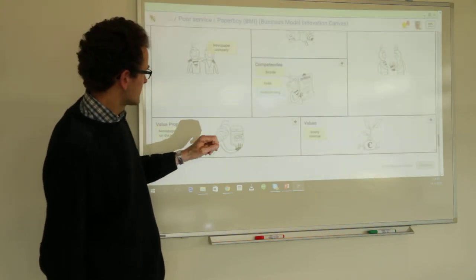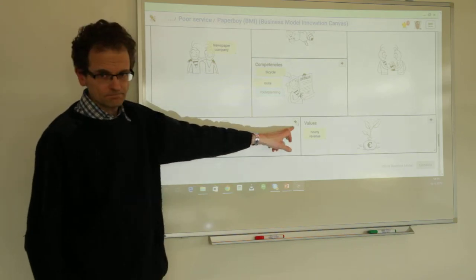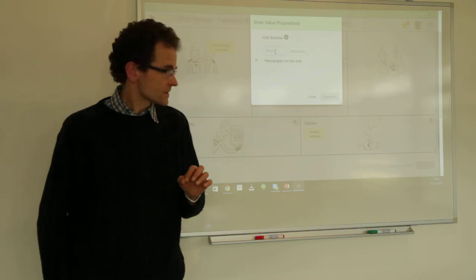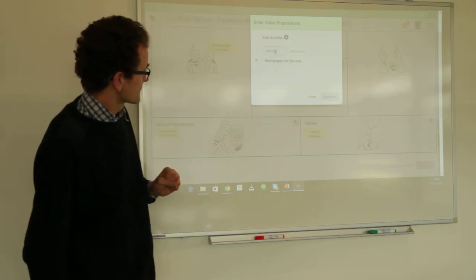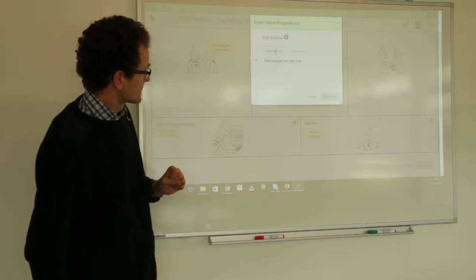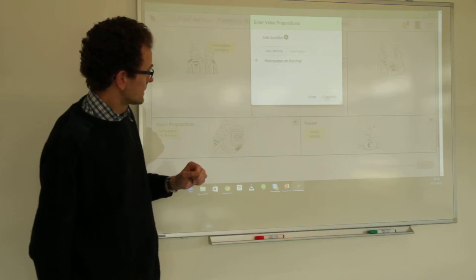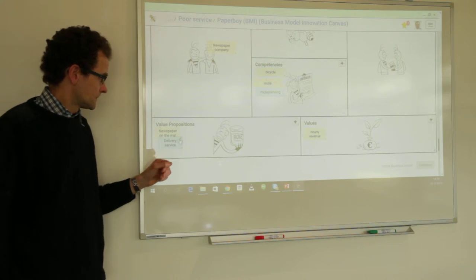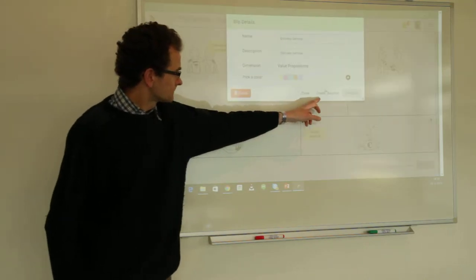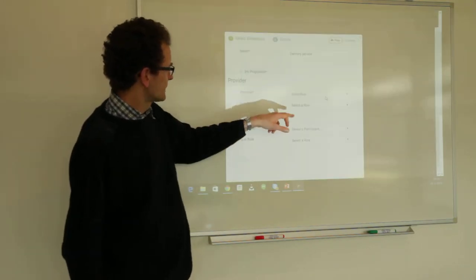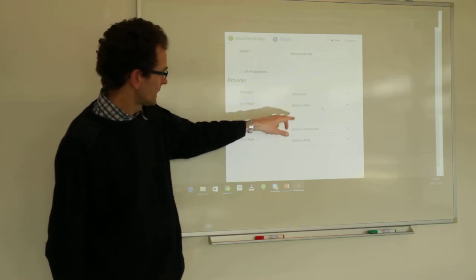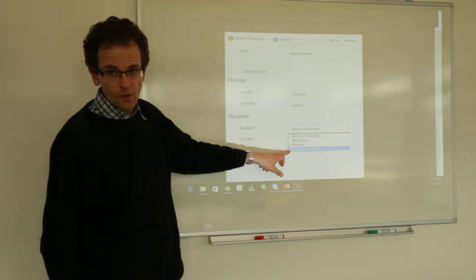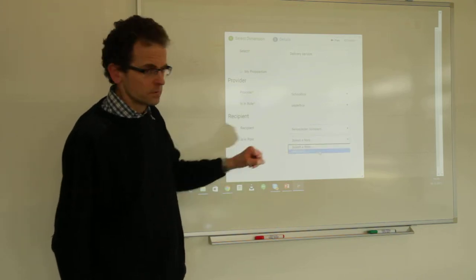Now let's enter another value proposition — let's say we enter delivery service. We give it a better position and map it right away. Let's say delivery service is provided by the schoolboy in the role of paperboy, and this time to the newspaper company, a partner, in the role of publisher.